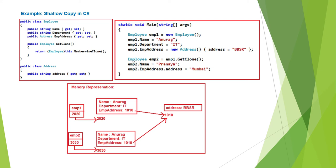When the fifth statement is executed, the GetClone (MemberwiseClone) method creates a clone object containing Name, Department, and EmployeeAddress properties. Name will be 'Anurag', Department will be 'IT'. The important point is that EmployeeAddress in the clone will also point to the same Address object created previously. A reference variable employee2 is created in stack memory holding the base address of this new clone object. Both emp1 and emp2 now reference the same Address object, so any changes to EmployeeAddress will affect both employee objects.